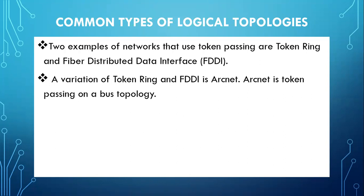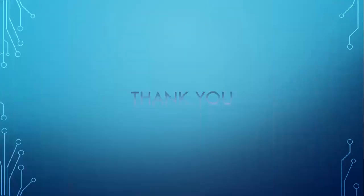Two examples of networks that use token passing are Token Ring and the Fiber Distributed Data Interface, known as FDDI. A variation of Token Ring and FDDI is AppleTalk, which is a token passing method on a bus topology — an example of a physical topology we will discuss in our next video.